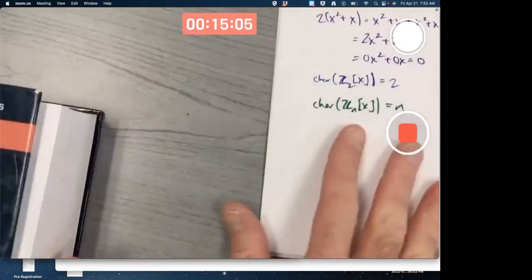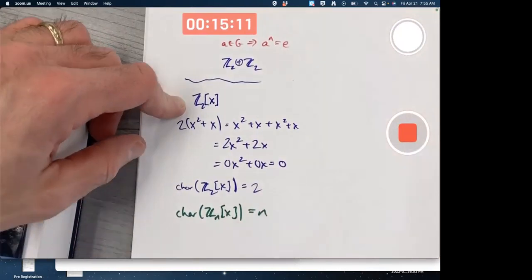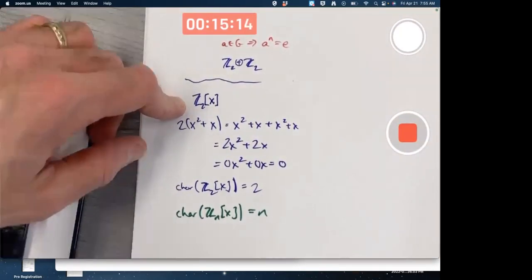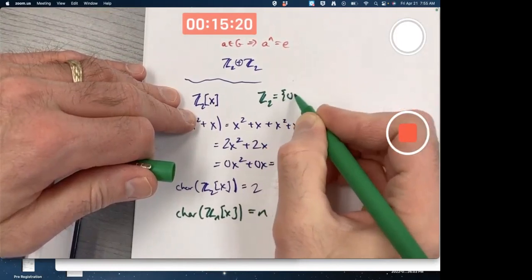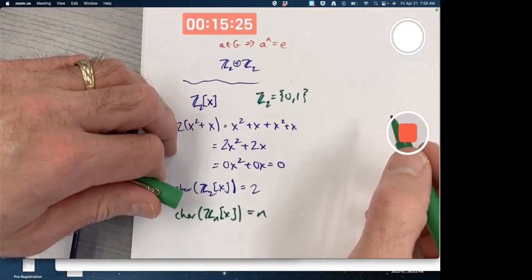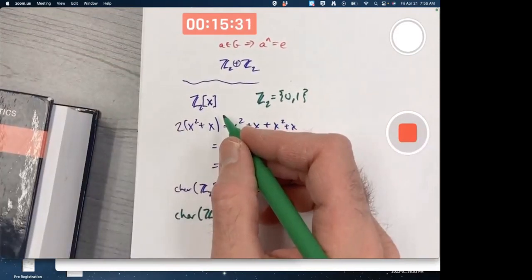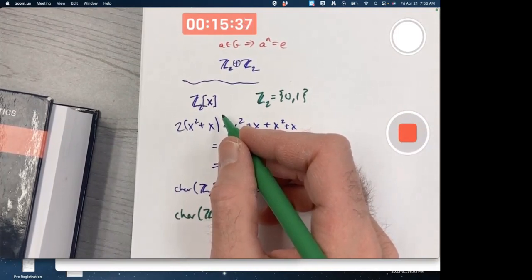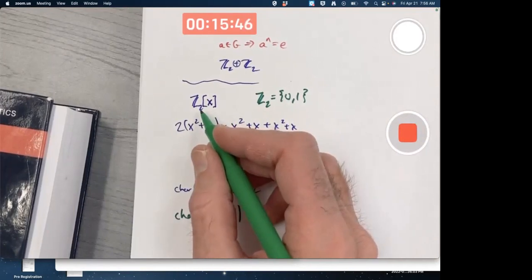By the way, you might wonder, is Z2[x] a field? I mean, after all, Z2 is, right? Z2 by itself. Two-element field with unity. Actually, fields have to have unity. Two-element field. Is this a field? The answer is no. Rings of polynomials are never, ever, ever fields. Rings of polynomials are never, ever, ever fields, even when the coefficients come from a field.